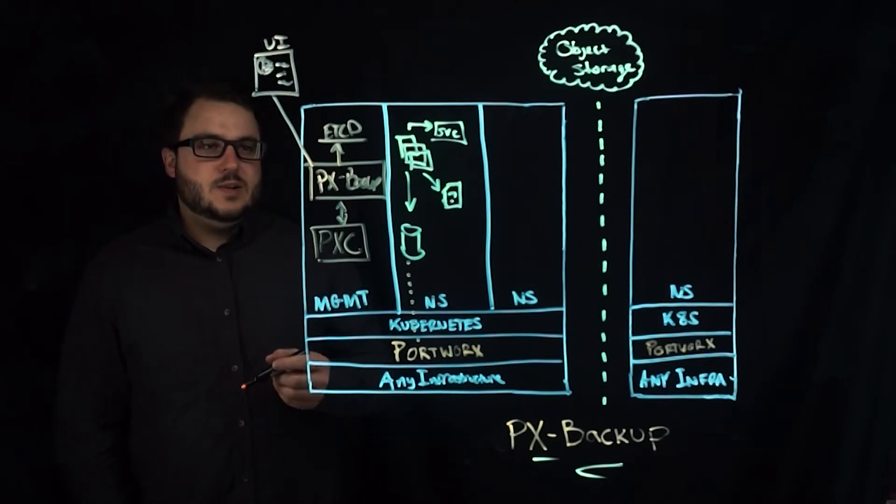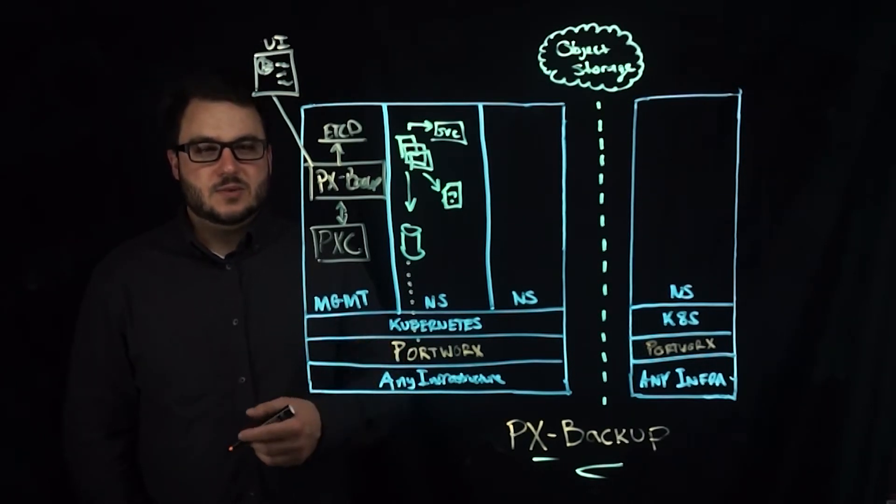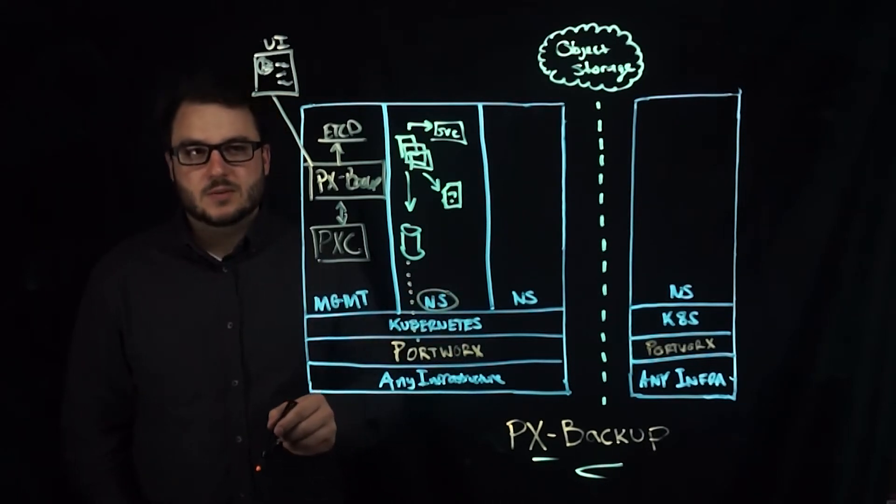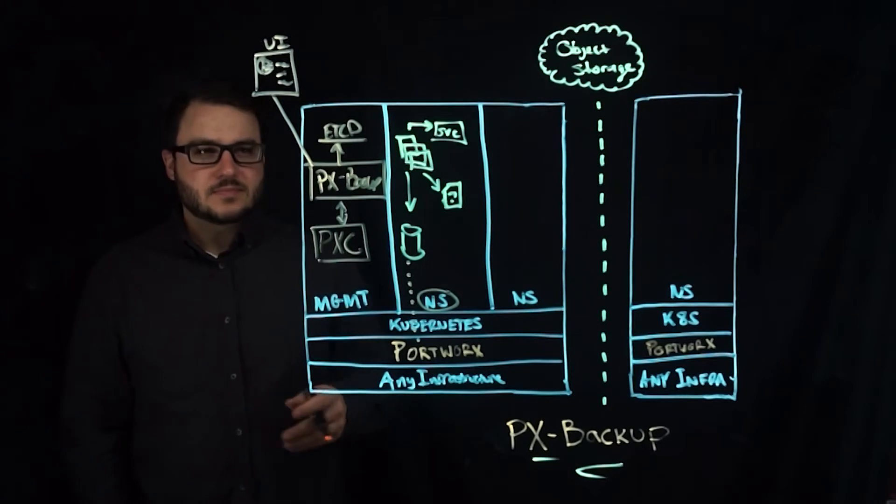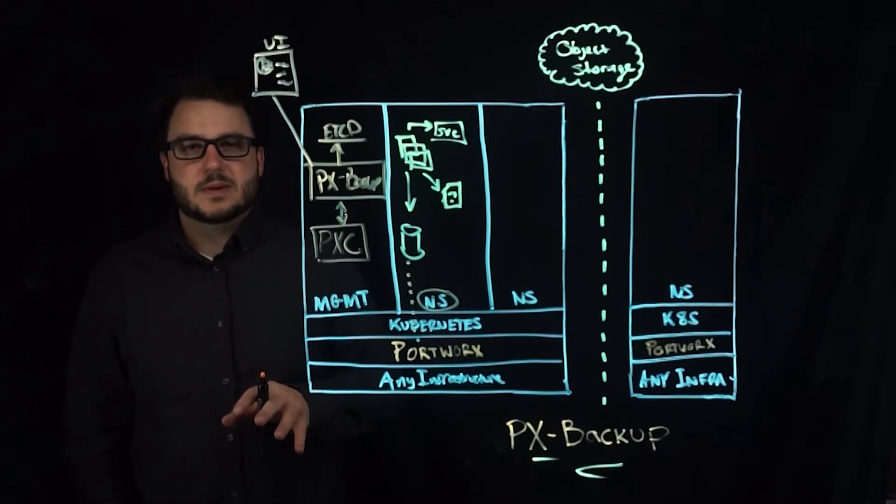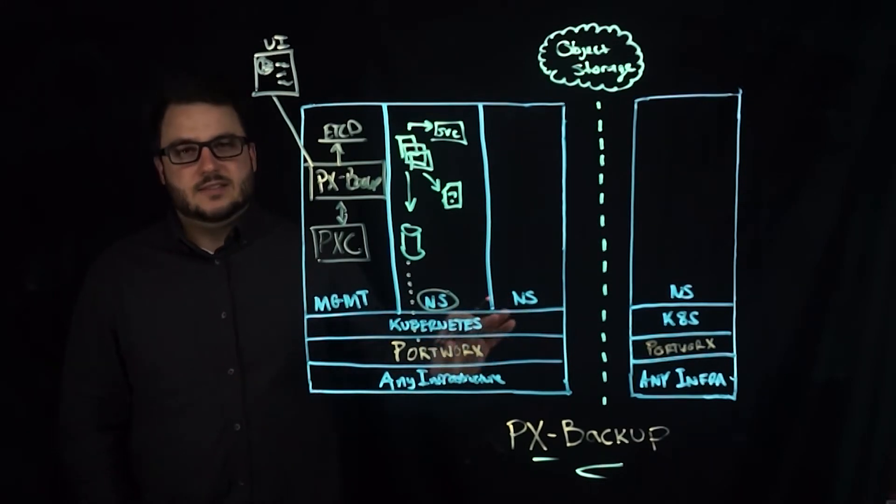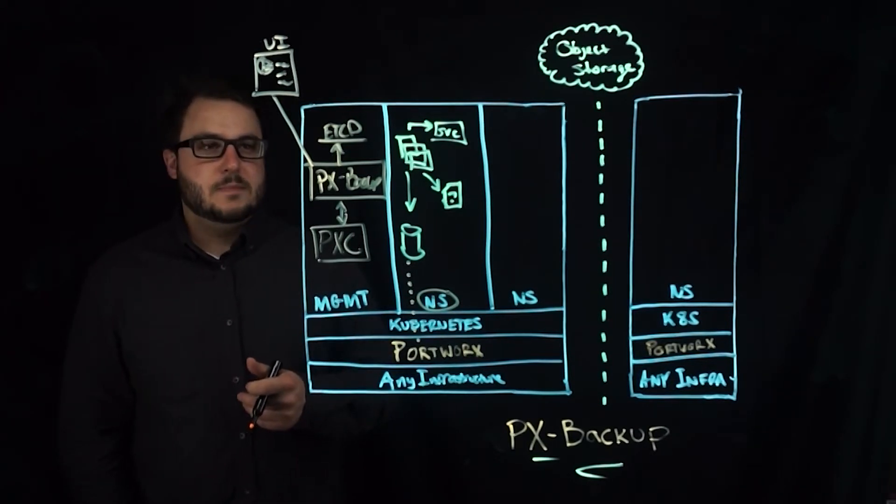In order to create a backup, we can do this at many different levels. So PX Backup allows you to back up the entire namespace, which is great for a blanket backup, meaning every application within this namespace, go ahead and take a backup of everything within it. And we'll restore that entire namespace when we need to for recovery.